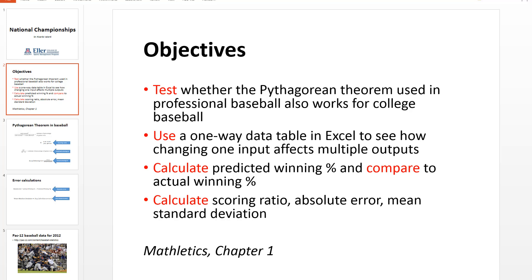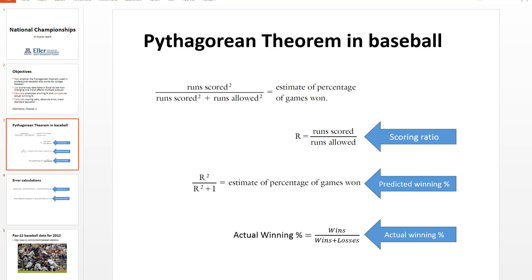We're going to do this by using a one-way table in Excel to see how changing one input — in this case the exponent in the Pythagorean theorem — affects multiple outputs. An intermediate step will require us to calculate predicted winning percentage and compare that to the actual winning percentage. We are also going to calculate the scoring ratio for a team, the absolute error of the Pythagorean theorem, and the mean absolute deviation to test whether the Pythagorean theorem is an accurate predictor of a team's wins over a season.